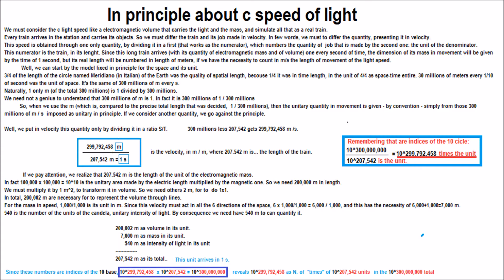The dimension of its mass in movement will be given by the time of one second, but its real length will be numbered in length of meters. If we have the necessity to count in meter per second the length of movement of the light speed...